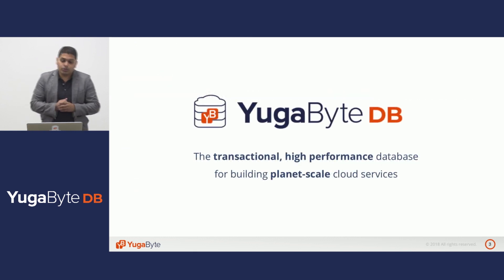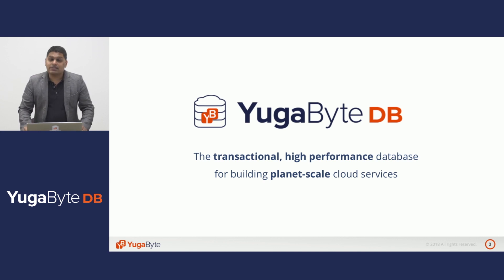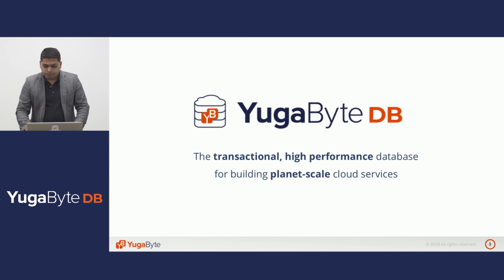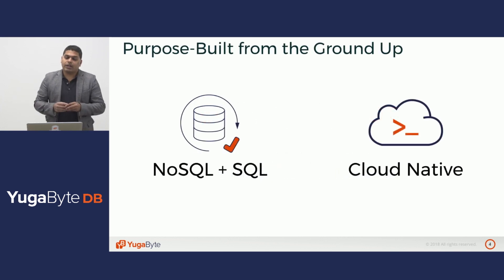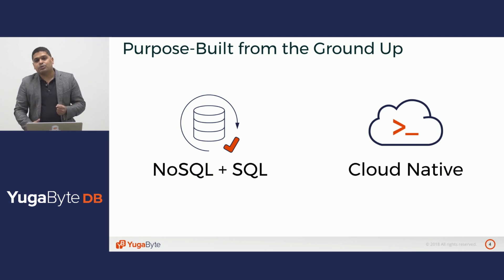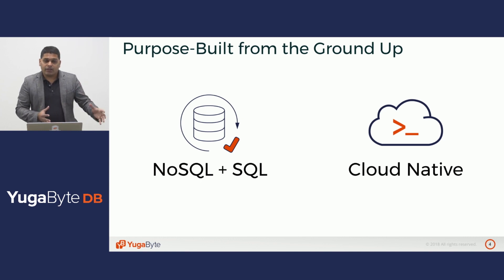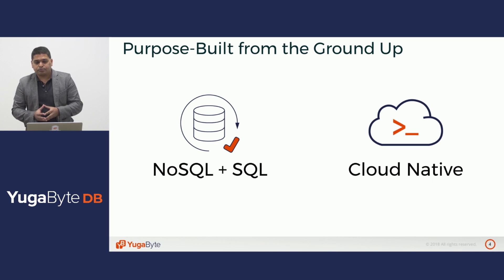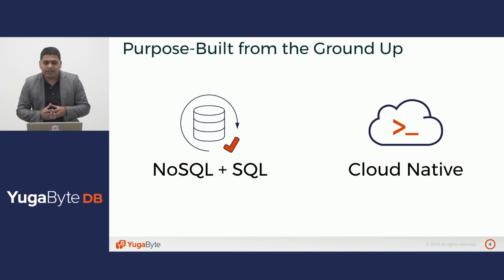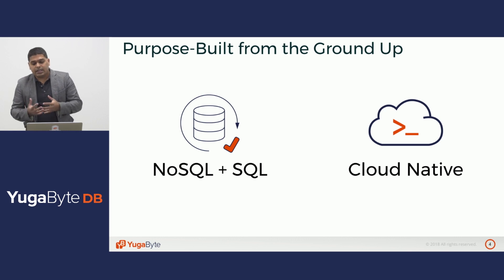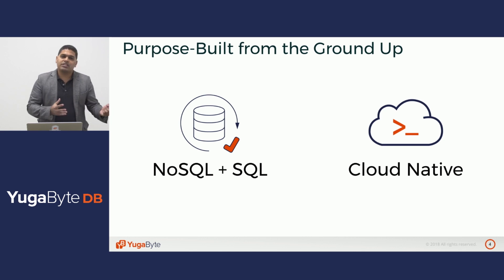With that, let's dive into Ugobyte DB. As you may know, Ugobyte DB is the transactional, high-performance database for building planet-scale cloud services. It's purpose-built from the ground up with an API layer that is both NoSQL and SQL at the same time. We have API compatibility with Cassandra, Redis, and PostgreSQL. At the heart of Ugobyte DB is a storage and replication architecture that's cloud-native, built for the cloud era where it can tolerate a lot of failures and also ensure infrastructure portability, very similar to what we have seen in containers.